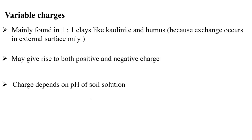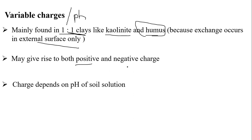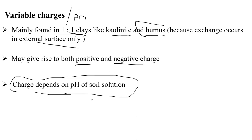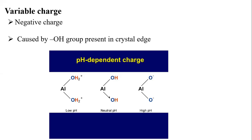Variable charges are pH-dependent. They are found mostly in 1:1 type clay minerals and humus, because exchange reactions occur on the surface. Both positive and negative charges can arise here, completely depending on the pH of the soil solution — unlike isomorphous substitution, where charge is independent of pH.